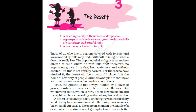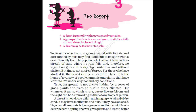The popular belief is that it is an endless stretch of sand where no rain falls — that means no rain happens and therefore no vegetation grows. Vegetation is again the same — the place where the plants grow. It is dry, hot, waterless and without any shelter. Shelter means protection from danger. But this is not entirely correct. For those who have studied it, the desert can be a beautiful place. It is the home of a variety of people, means different kinds of people, animals and plants that have learned to live under very hot and dry conditions.